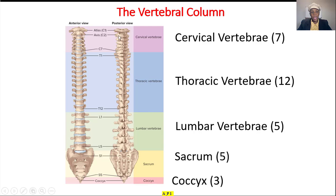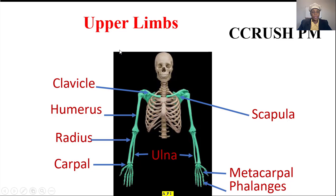And the vertebrae on the back. We have the cervical vertebrae, like the neck — seven of them. Thoracic vertebrae, twelve of them. Then the lumbar vertebrae, five. Sacrum, or five fused vertebrae. And the coccyx, or three vertebrae.